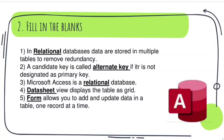A candidate key is called dash if it is not designated as a primary key. So a candidate key that is not designated as the primary key is known as an Alternate Key.